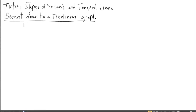Hey, everybody. This is going to be two parts to our notes. The first part you're going to put on your own notebook paper, and the second part of the notes will be found on that worksheet that you were given — slopes of secant lines. The topic for these notes will be slopes of secant and tangent lines. We're going to start with a look at a secant line to a nonlinear graph, just getting some background information about the next topic we're going to cover.